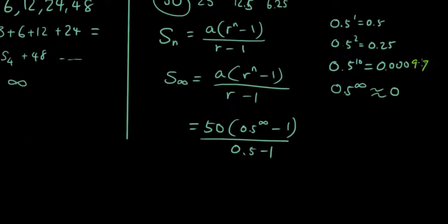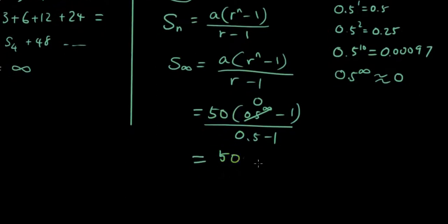So we can simply cross this out and change it to 0. So therefore, it's just 50 times negative 1 over negative 0.5, and the answer is simply negative 50 divided by negative 0.5, which is 100.